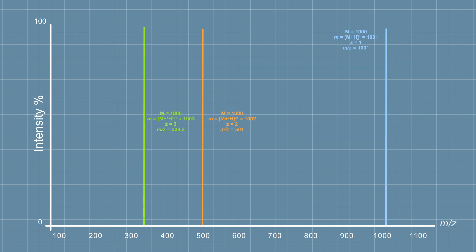If three protons are added the mass is 1003 and the charge three so the ion is observed at 334.3 and with four protons added the mass is 1004, the charge is four and the ion is at m/z 251.